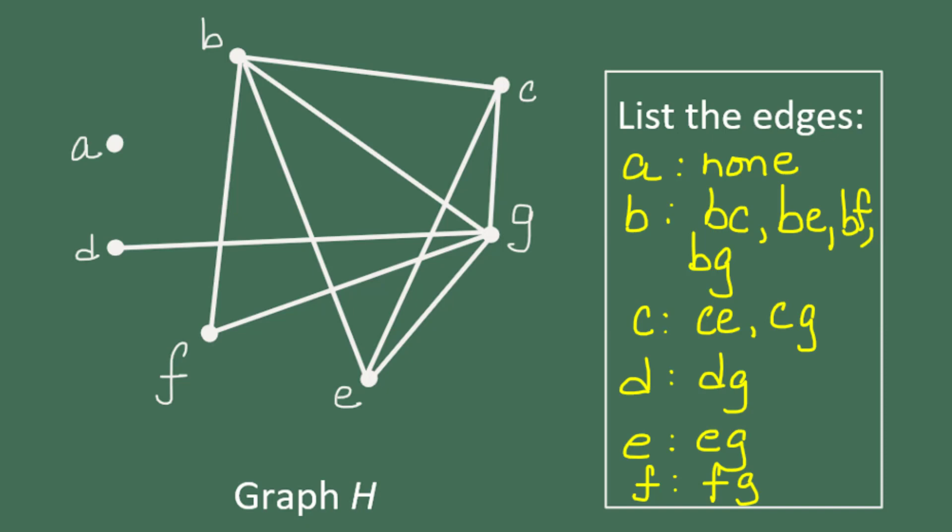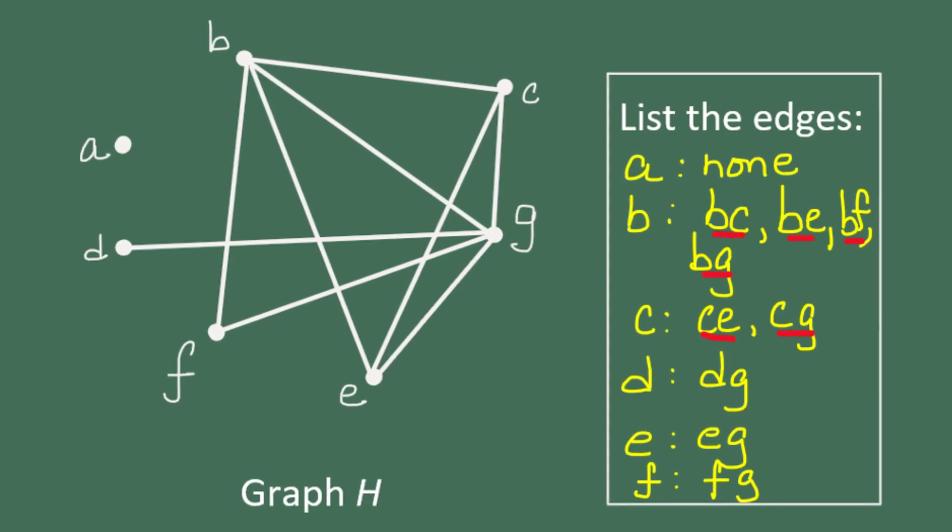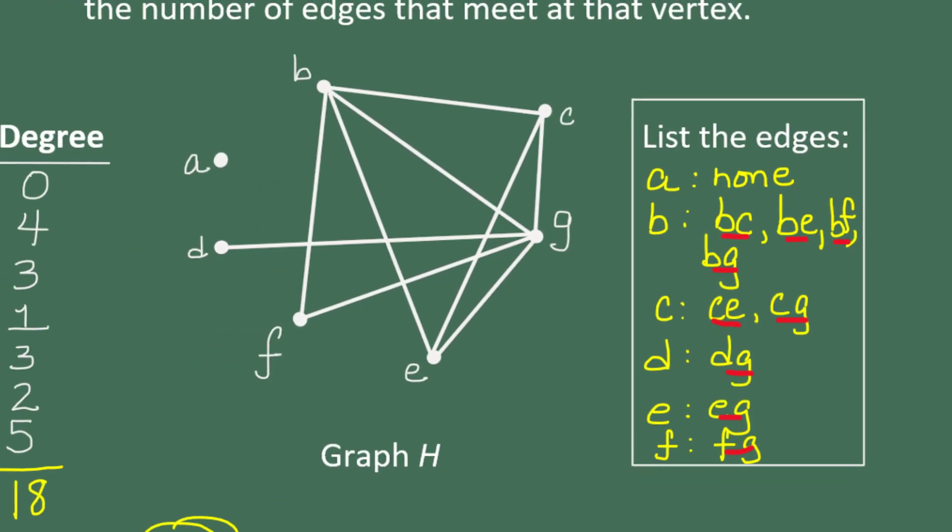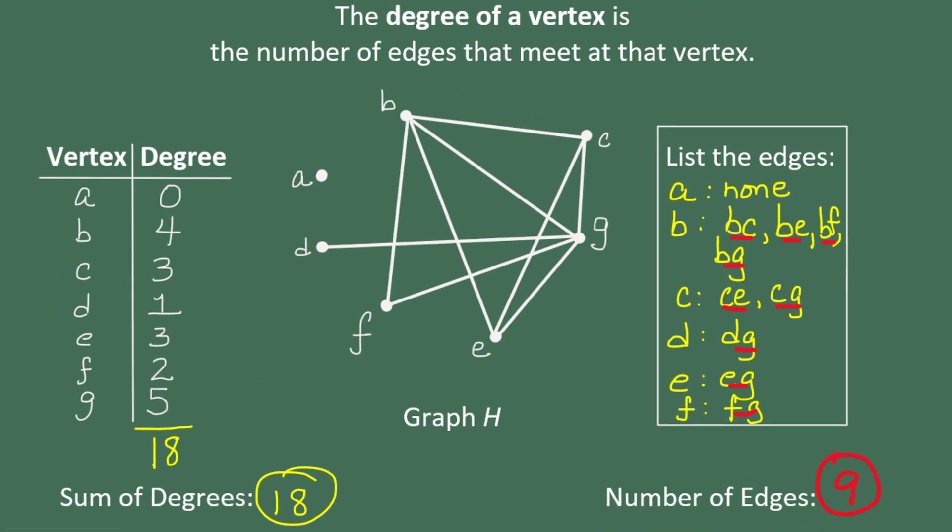Let's count how many edges we have. One, two, three, four, five, six, seven, eight, nine edges. We have nine edges. And we have 18 degrees. Notice that nine is half as many as 18. In other words, 18 is twice as big as nine. The sum of the degrees was twice the number of edges.